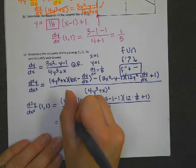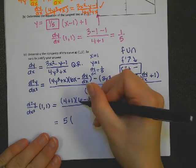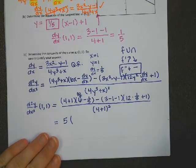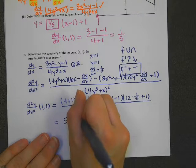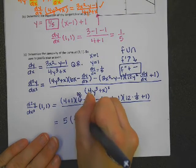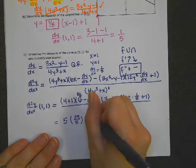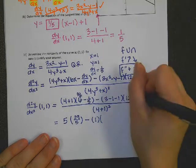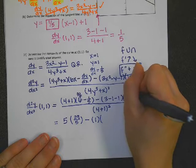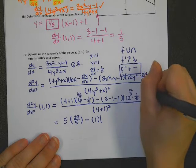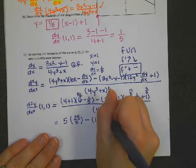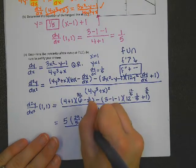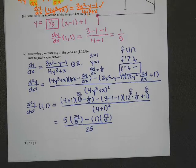This is 5 times 6 would be 30 over 5, so this would be 29/5 minus 1 times, this is 12/5, and this would be 5/5, so 17/5, all over 25, 5 squared on the bottom.